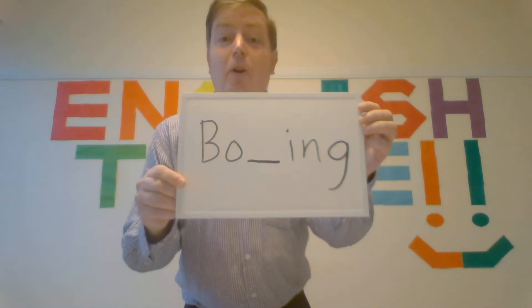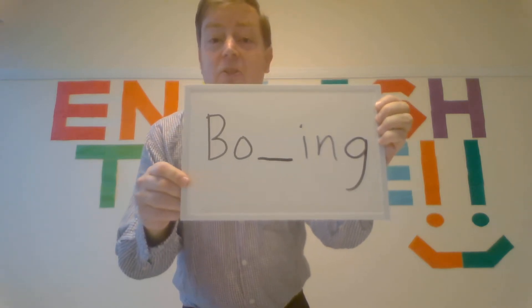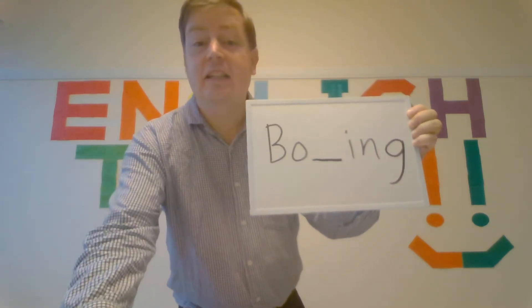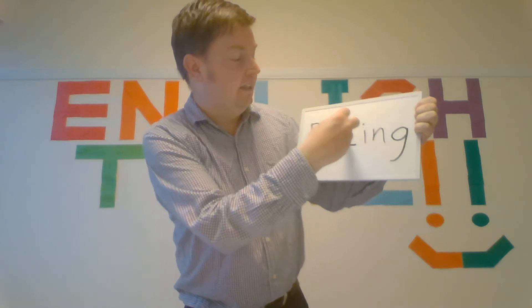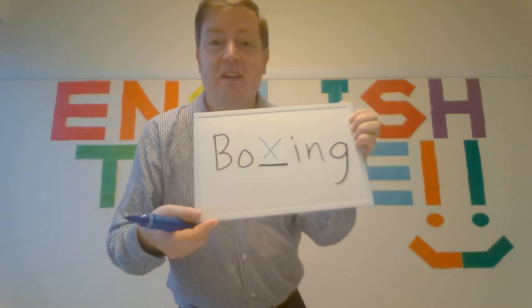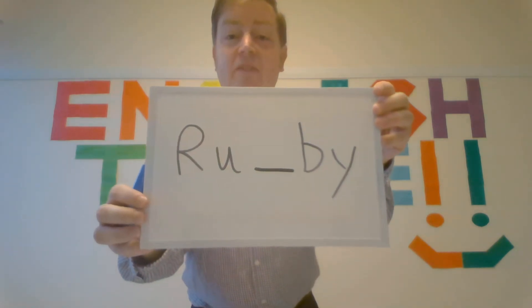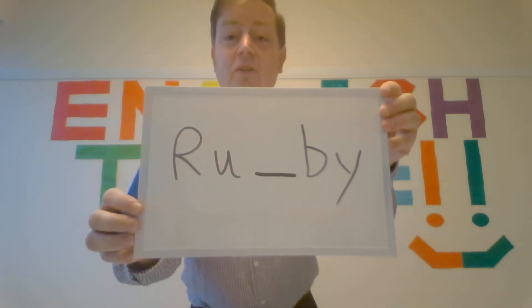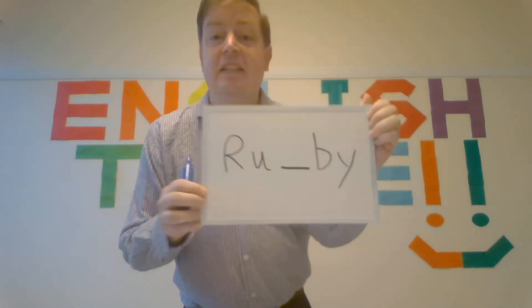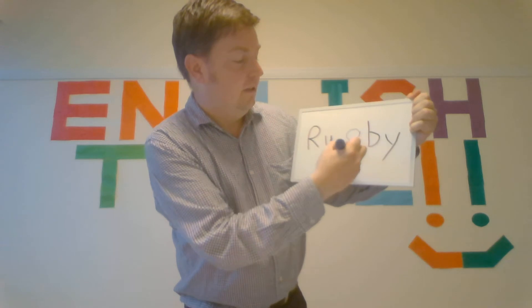The first word: boxing, boxing. Five seconds — five, four, three, two, one. The answer is X. So please repeat: boxing, boxing. Very good. Next word: rugby, rugby. Five seconds — five, four, three, two, one. The answer is G.